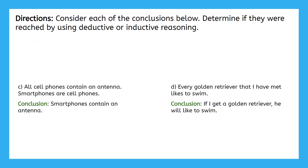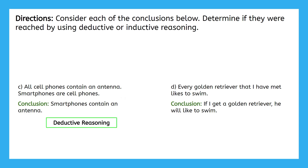Go ahead and finish off parts C and D now. Part C says: all cell phones contain an antenna. Smartphones are cell phones. Are those facts or are they observations? Those are facts. So our conclusion — smartphones contain an antenna — comes from deductive reasoning. Part D says: every golden retriever that I have met likes to swim. Well, that's just one person's observation about golden retrievers. It's not a fact that all golden retrievers ever across the whole world always like to swim. Since this is an observation, the conclusion — if I get a golden retriever, he will like to swim — comes from inductive reasoning.